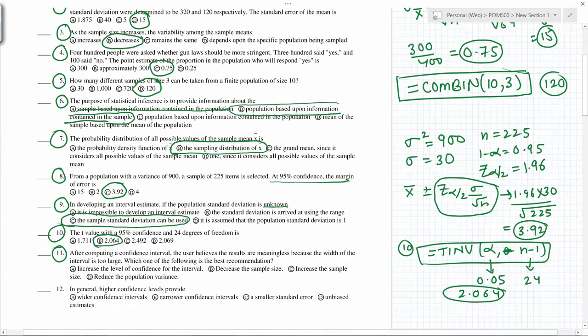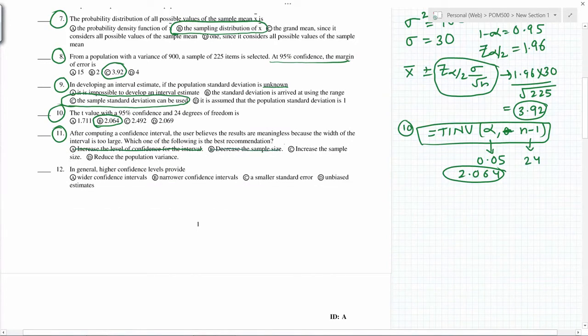After computing a confidence interval, the user believes the results are meaningless because the width is too large. Which one of the following is the best recommendation? If the width is too large, what can we do? Increase the level of confidence? That will make it even wider. Decrease the sample size? That will make it even wider. Increase the sample size - this looks like the correct answer, because once you increase the sample size you get more accurate estimates. In general, higher confidence level provides wider confidence intervals.